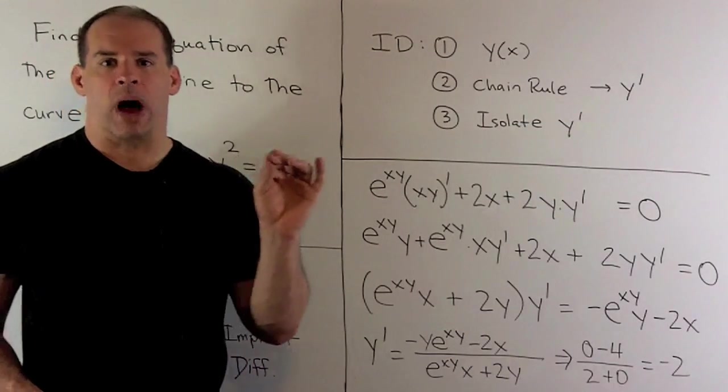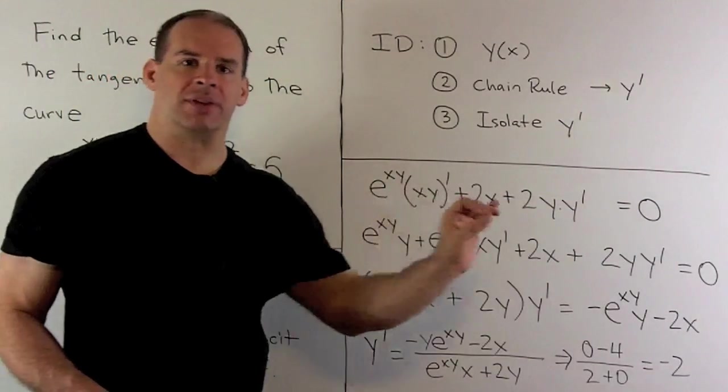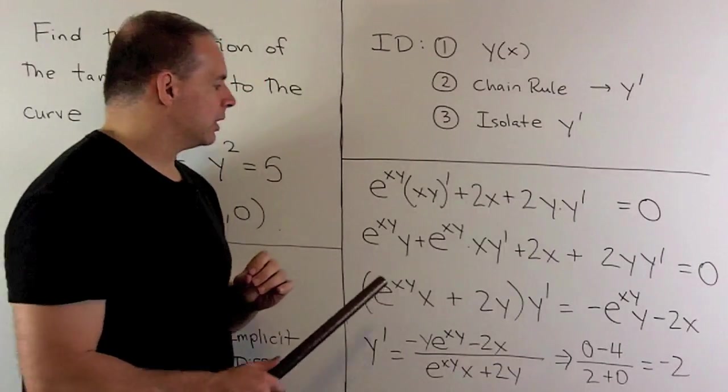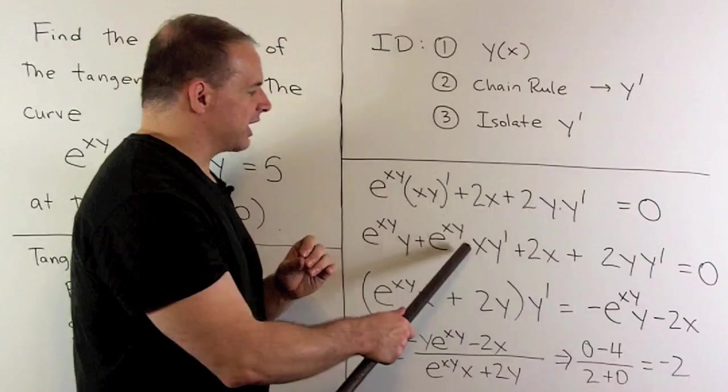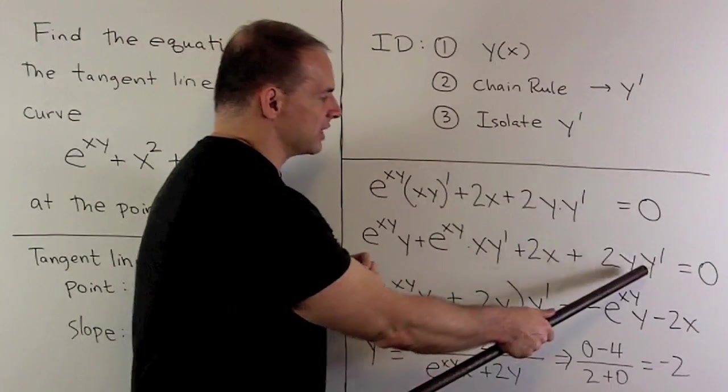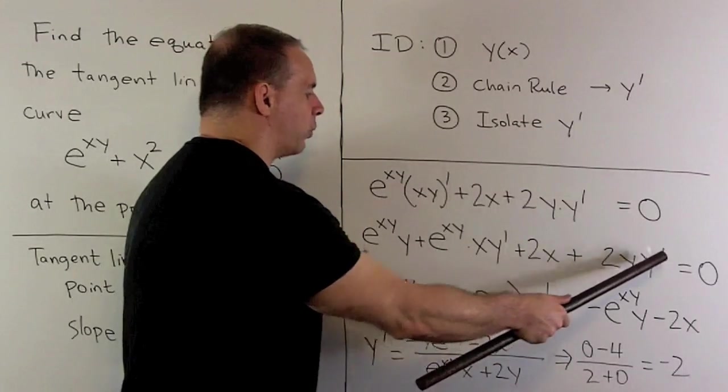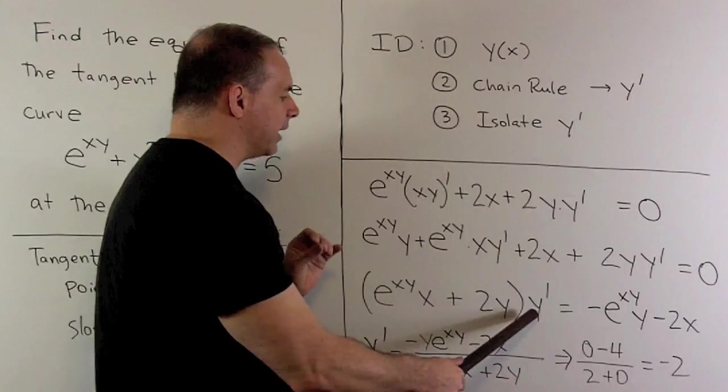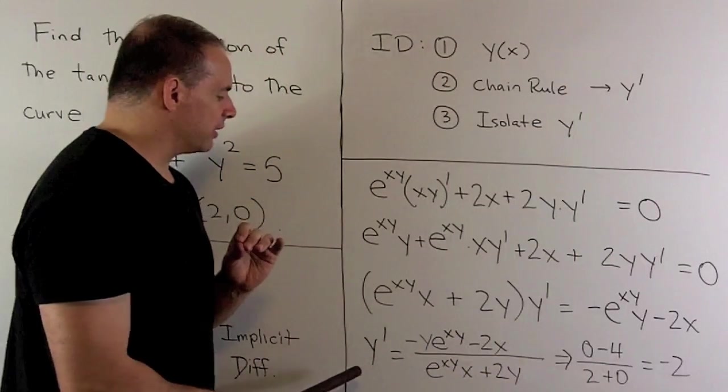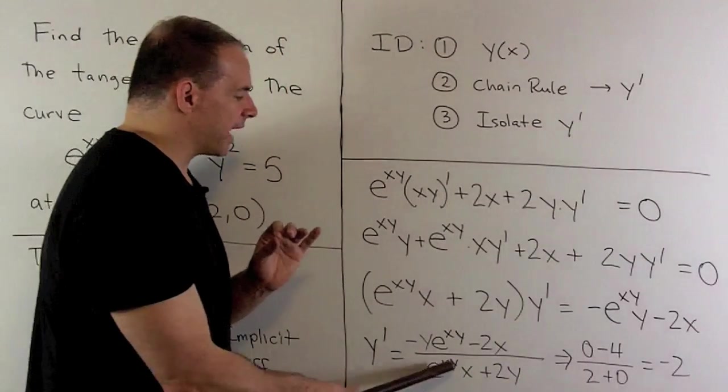We'll keep the y' terms on the left-hand side, push everything else to the right-hand side. For the terms that stay, we're going to factor out a y'. And then, we're going to divide. So that gives me an expression for y' in terms of x and y.